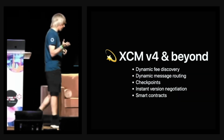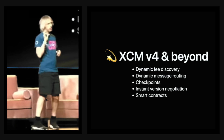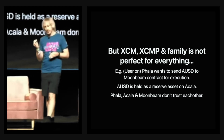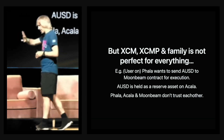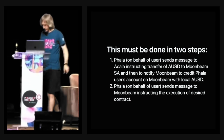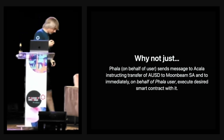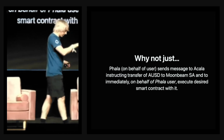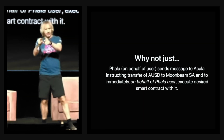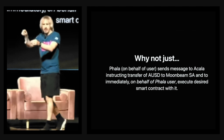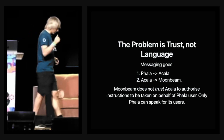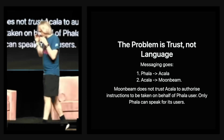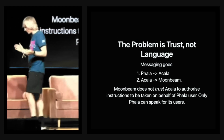Even Parity is thinking about XCM v4, but Gav then pivots to what XCM can't solve. The problem: a Falla user wants to move aUSD, which is native to Acala, to Moonbeam and execute a smart contract there. Some have asked if this can be done in one step, but it can't — it must take two. Why can't we just tell Acala to transfer the aUSD, send it on to Moonbeam, and have Moonbeam execute the smart contract action directly? The answer is no.